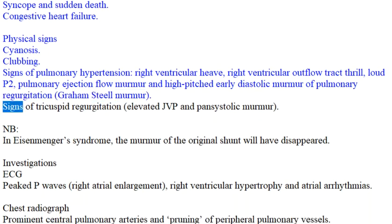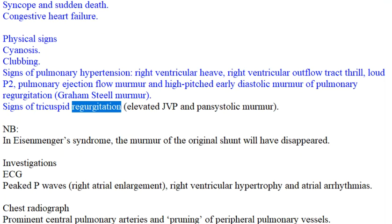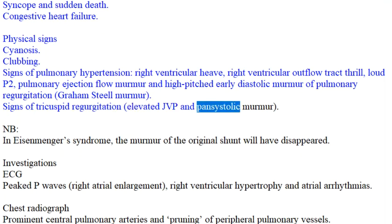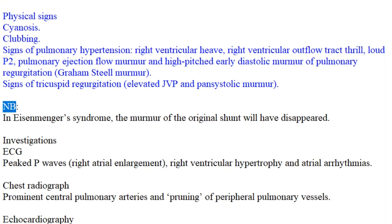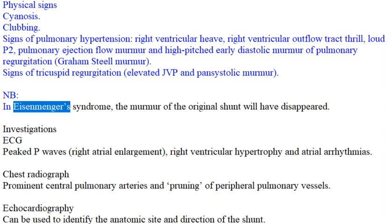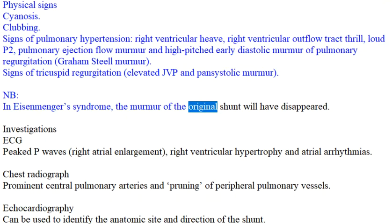Signs of tricuspid regurgitation include elevated JVP and pansystolic murmur. Notably, in Eisenmenger's Syndrome, the murmur of the original shunt will have disappeared.